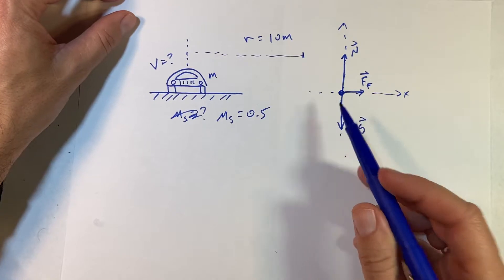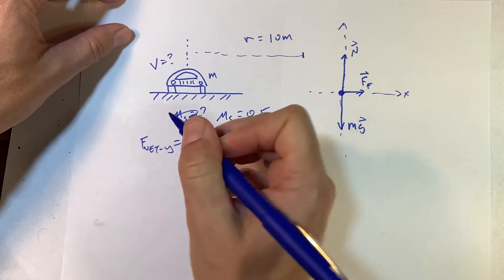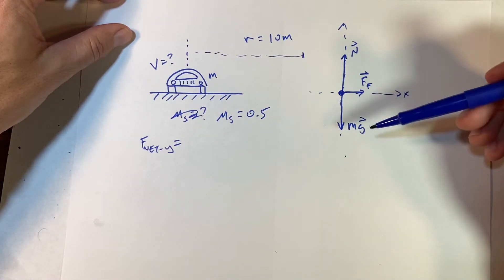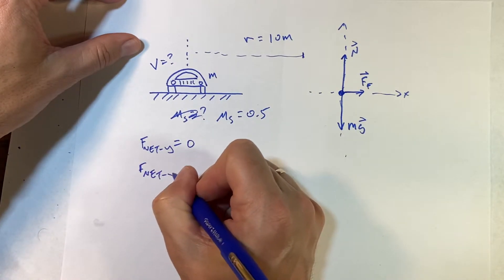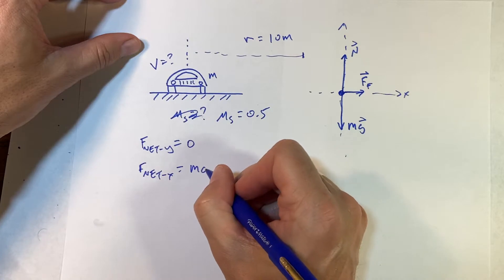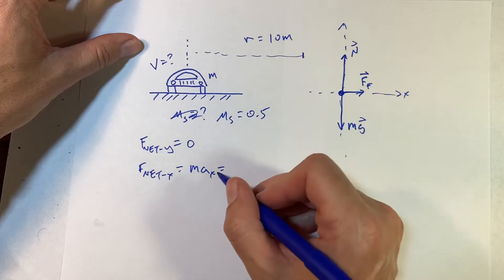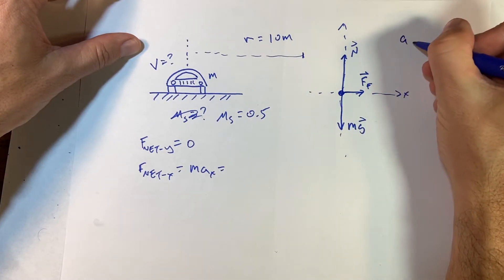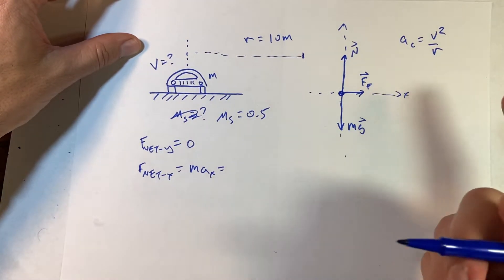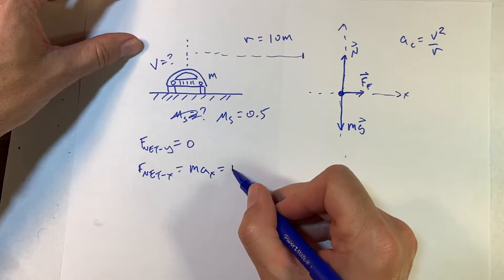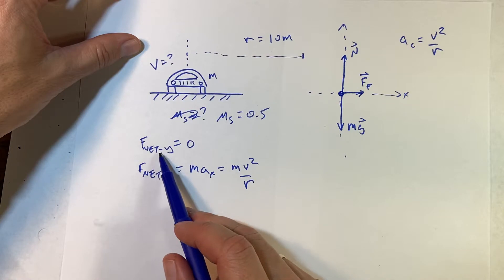We want to find how fast it can go. Let's do our normal setup: F_net in the y-direction equals zero, since if it stays on the ground the y-acceleration is zero. F_net in the x-direction equals m·a_x, and this is centripetal acceleration, so it equals m·v²/r — since a_c = v²/r, which we derived a couple of videos back.